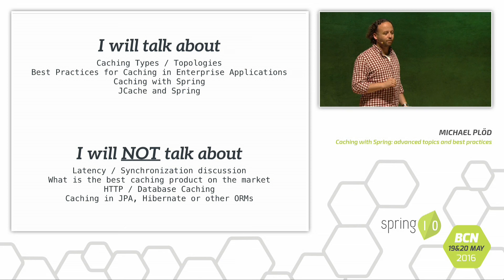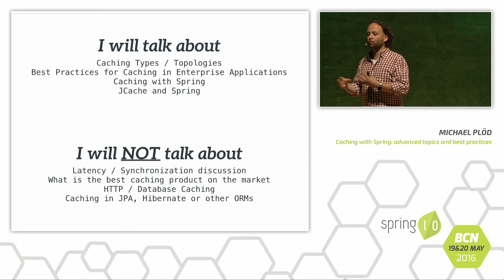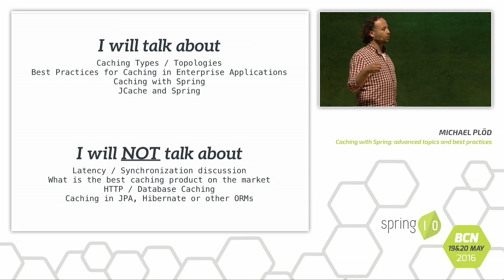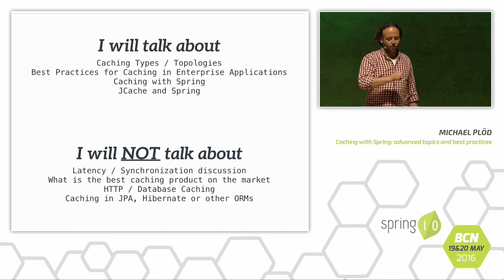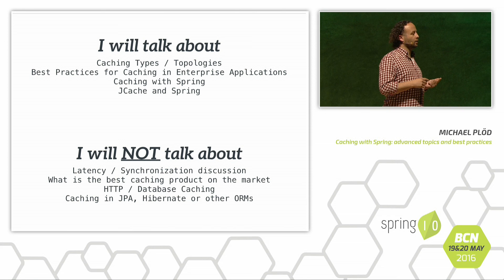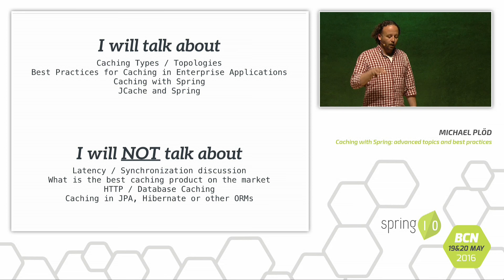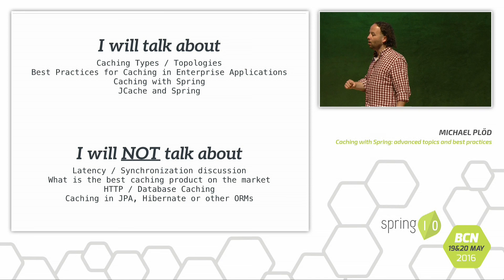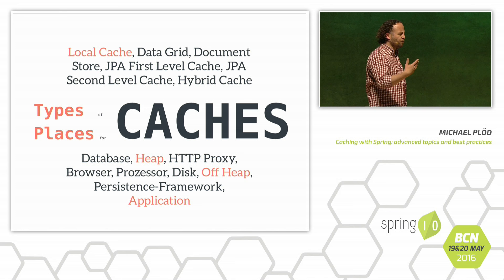What are we going to talk about in these 50 minutes? This talk has two parts. One part is a rather general set of best practices, ideas, and introductions to caching — so if you're not going to use caching in Spring, you might still benefit from quite a bit of it. Then we'll take that content and see how to add caching in Spring. We'll talk about Spring's cache abstraction and JCache, but please be aware this talk is not about NoSQL Spring Data-related stuff, not about latency discussions, synchronization discussions, the best caching product, or caching in JPA/Hibernate.